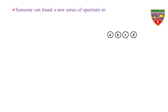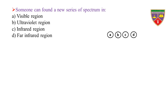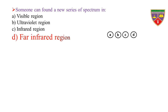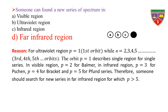Someone can find a new series of spectrum in: Option A, visible region; Option B, ultraviolet region; Option C, infrared region; Option D, far infrared region. The key is far infrared region. The correct option is B. Reason: far ultraviolet region.